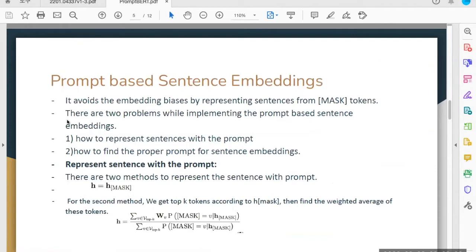I'm going to briefly talk about prompt-based sentence methods to obtain sentence embeddings. By using sentence embedding as the mask language, we can use the original BERT layers. This method can also avoid the embedding biases when we represent sentences from mask tokens.